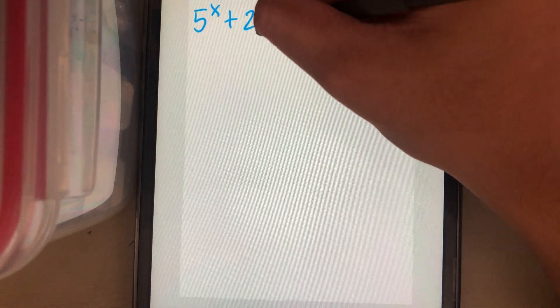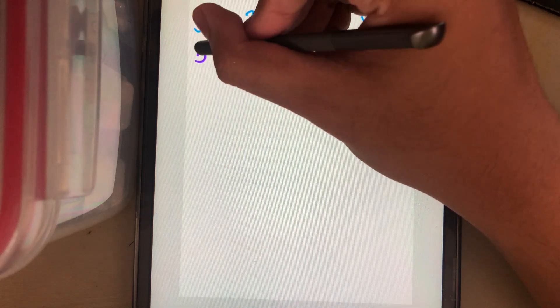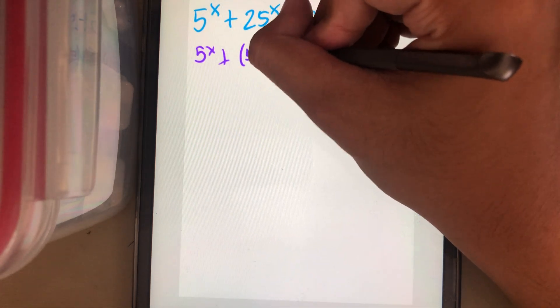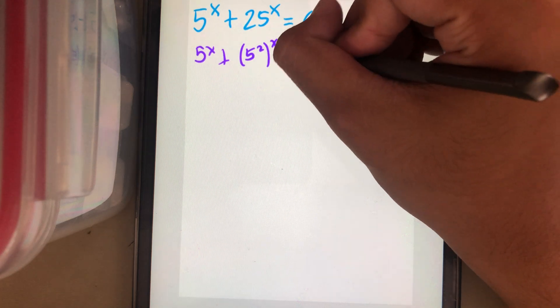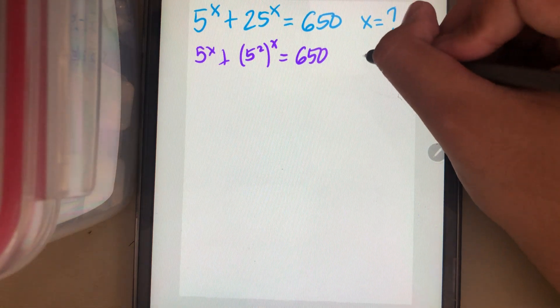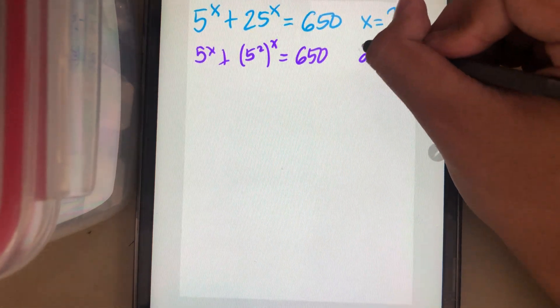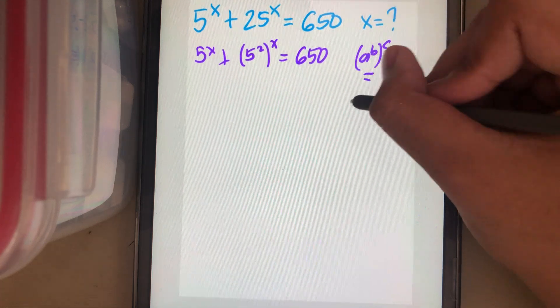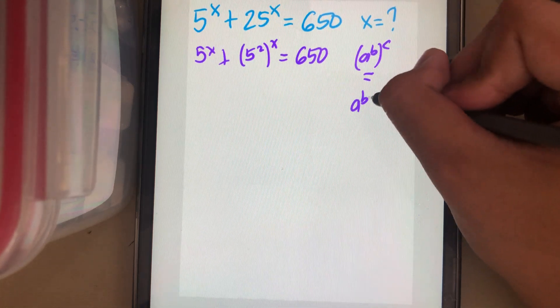We can replace the 25 power x by 5 square power x. And then let's recap the power rule. A power b, power c, multiplied exponent, it's a power b c. Or you can swap the exponent. That's a power c, power b.